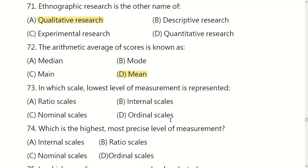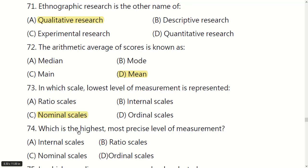In which scale is the lowest level of measurement represented? Options are: ratio scale, interval scale, nominal scale, or ordinal scale. The right option is: nominal scale.